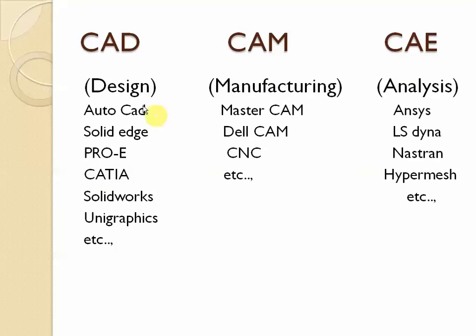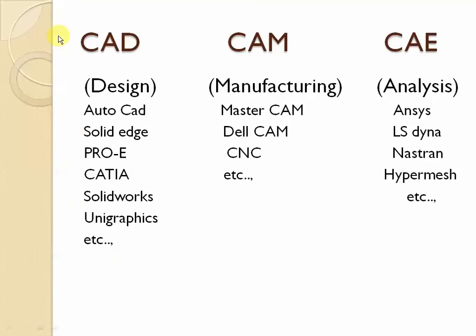First, Computer-Aided Design. Here we have AutoCAD — this is primarily a 2D software, though you can draw in 3D as well, it is especially used for 2D. And Solid Edge, Pro-E, CATIA, SolidWorks, UniGraphics, etc. These are the main software used in industries and will be useful for your career. In this channel, I am going to discuss this segment.